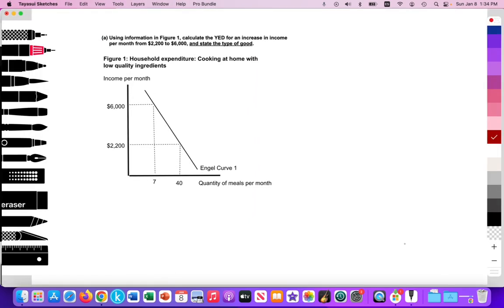So here we have a question that you might see on a paper three. Here it says, using information in Figure 1, calculate the YED for an increase in income per month from $2,200 to $6,000. So income is rising per month over time, and we're trying to see what's the impact on household spending on cooking at home with low quality ingredients.